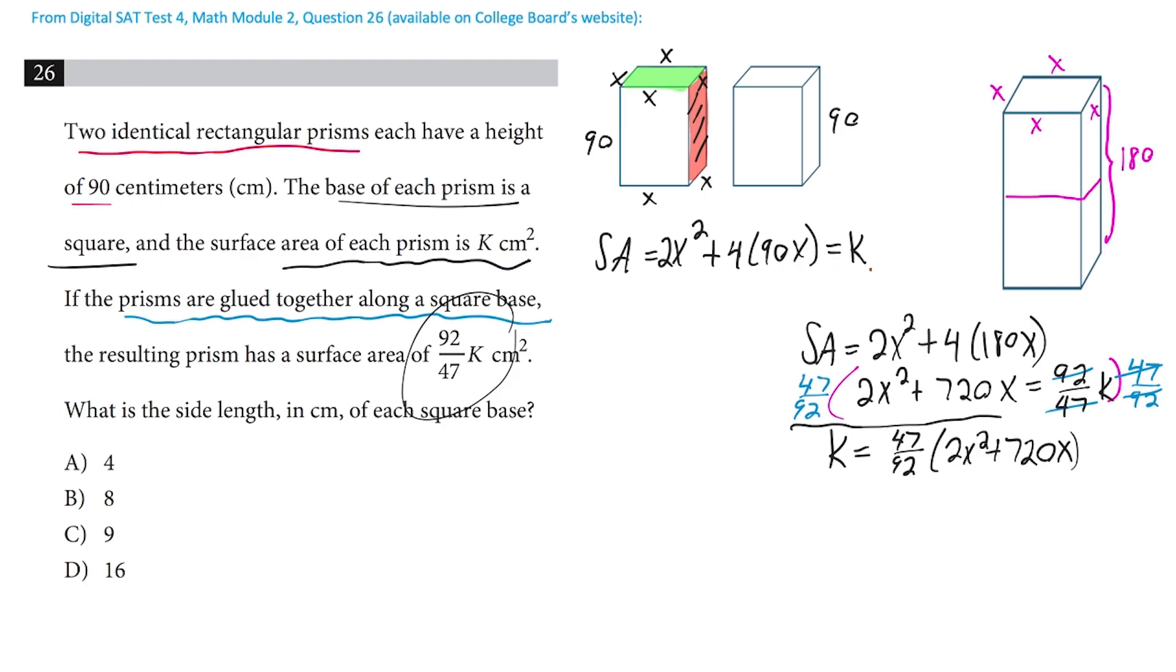So now if k equals this and k also equals this, then we're allowed to set those two things equal to each other. This, by the way, is 360x. So let's bring that over here: 2x squared plus 360x. And let's bring this other one over here.